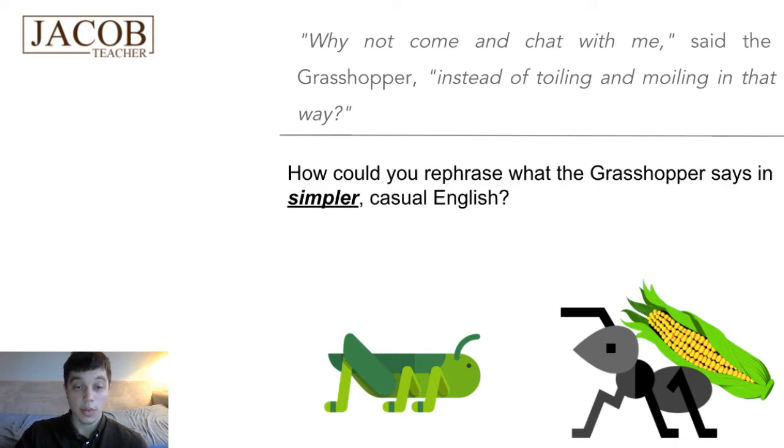My first question for you guys. It's my cat saying hello. How could you rephrase what the grasshopper says in simpler, casual English? Why not come and chat with me? No one really talks like that. You could say that and it would be fine, but in today's world, no one really says that. Toiling and moiling in that way. Okay, certainly no one talks like that. Remember, toiling is working extremely hard. Same with moiling. It's just both of those words deal with hard physical labor. So, when you're working really hard, you're toiling away. You can also use toil as a noun as they do in this story.